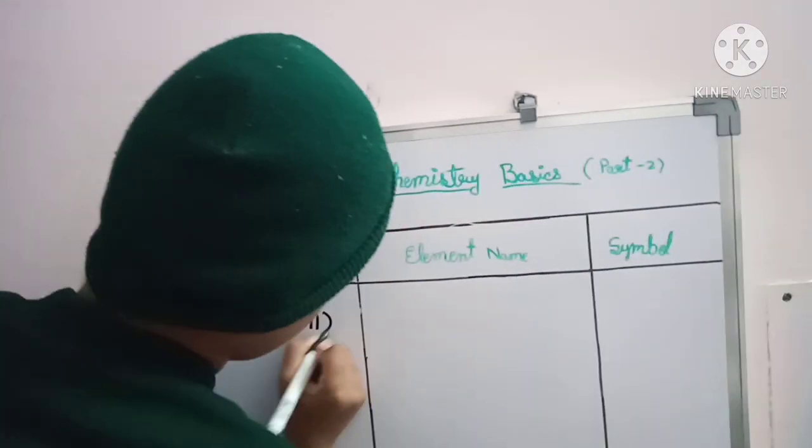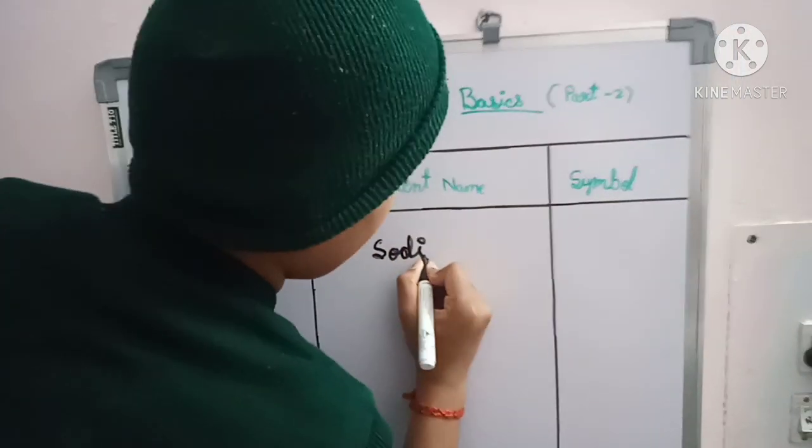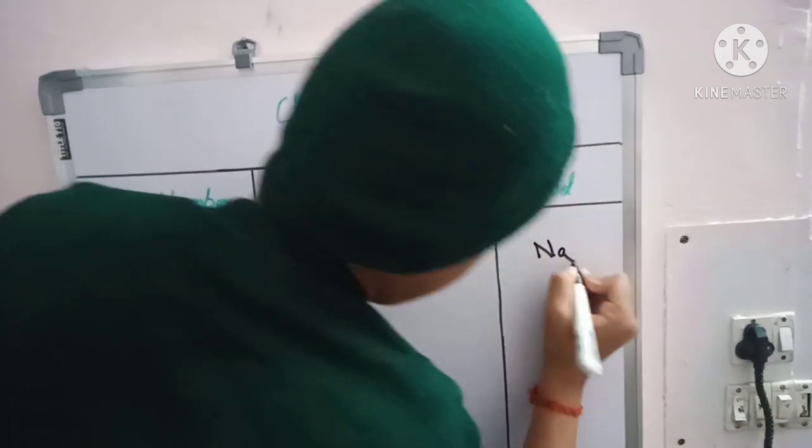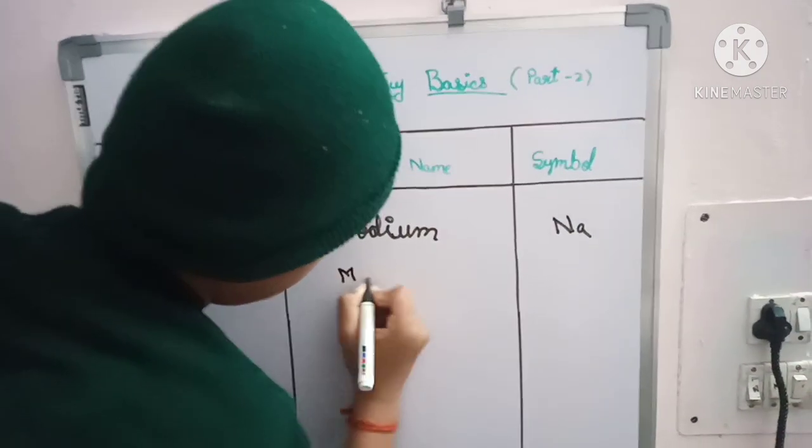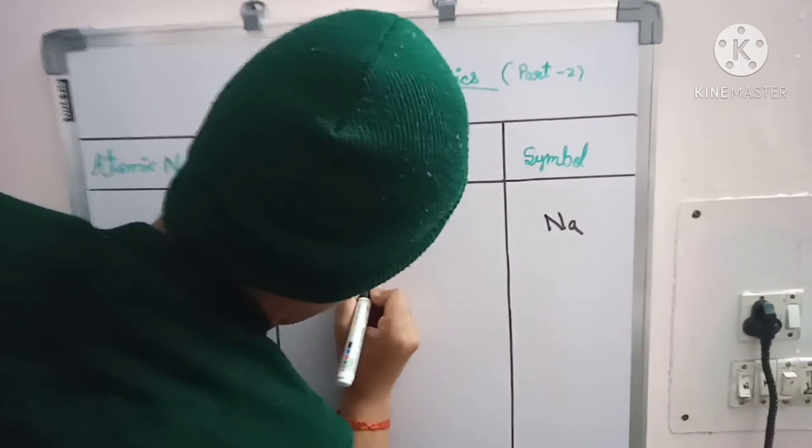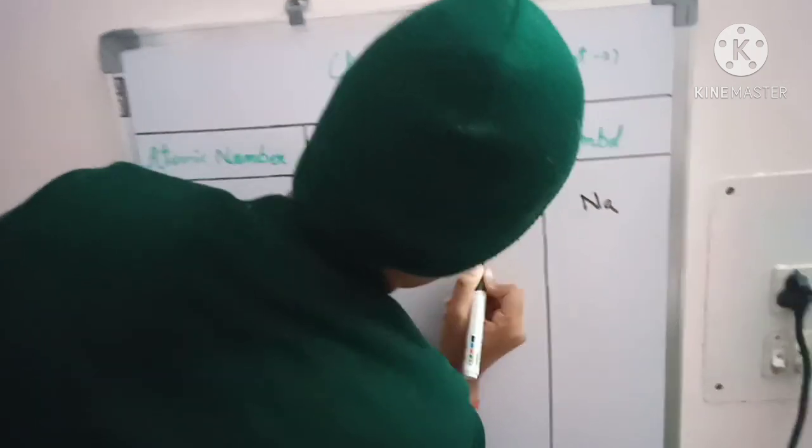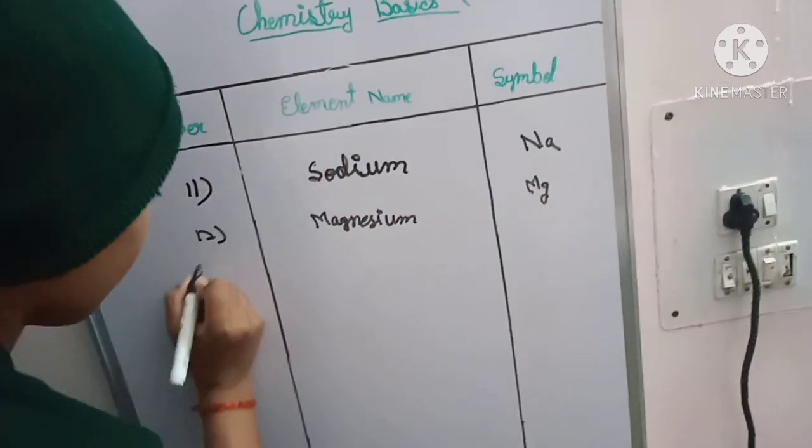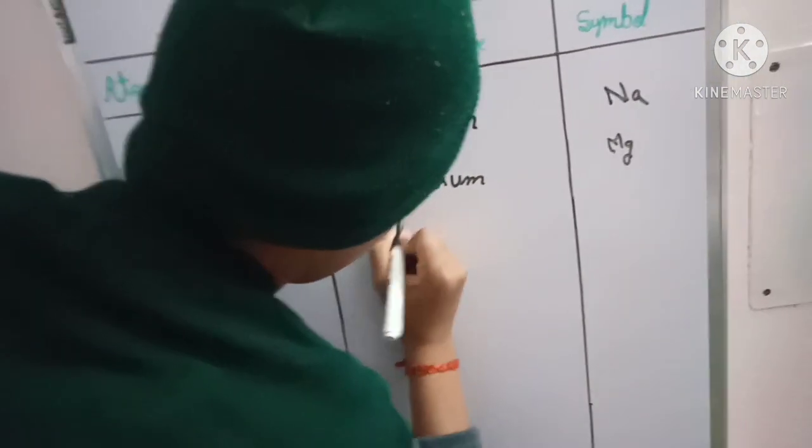11th one is sodium, symbol is Na. 12th one is magnesium, symbol is Mg. 13th one is aluminium, symbol is Al.